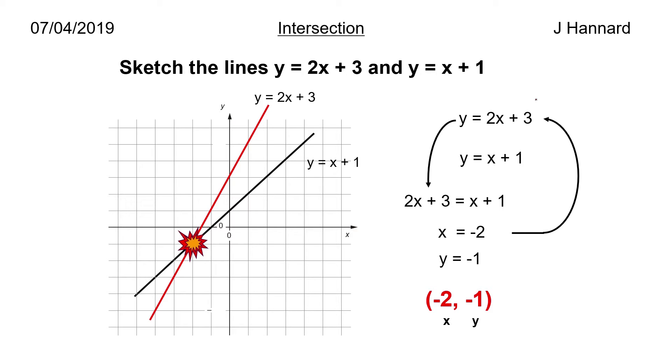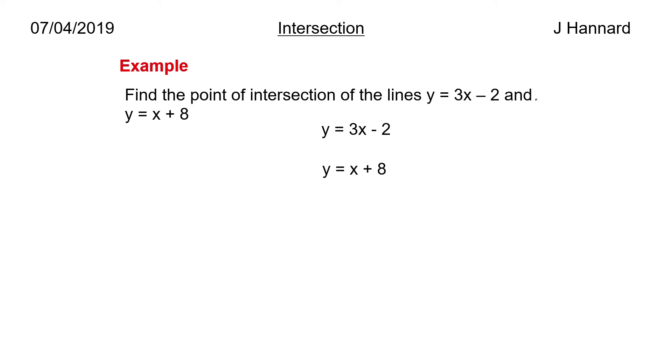Here's an example then. Find the point of intersection of the lines y equals 3x minus 2 and y equals x plus 8. So we've got our two equations. Y is equal to 3x minus 2 and also y is equal to x plus 8. So we know that y equals 3x minus 2, so why not take that 3x minus 2 and sub it in for our value here? So we go down and we call it 3x minus 2 equals x plus 8.